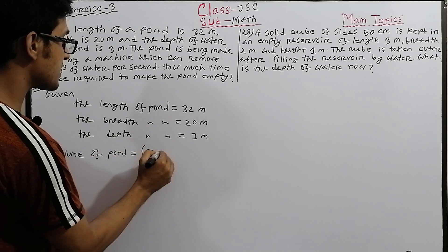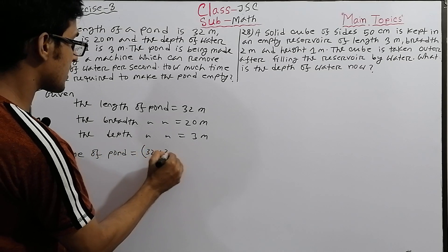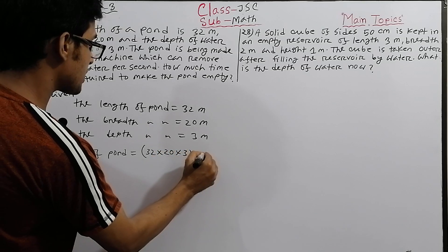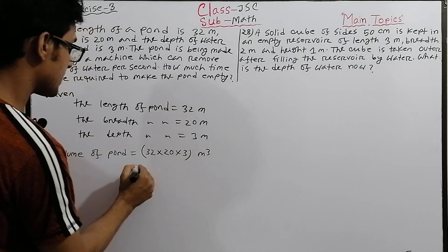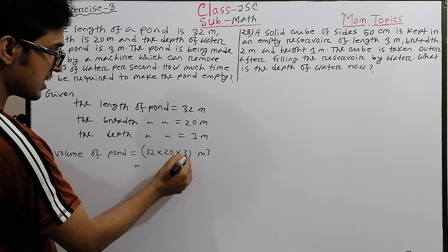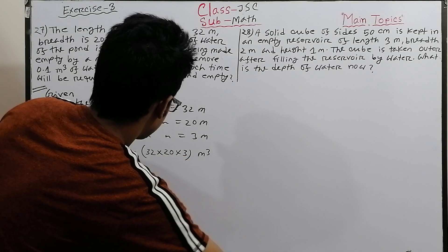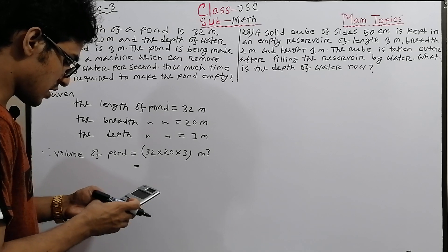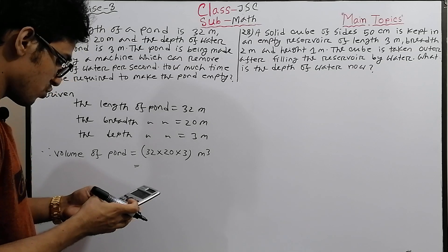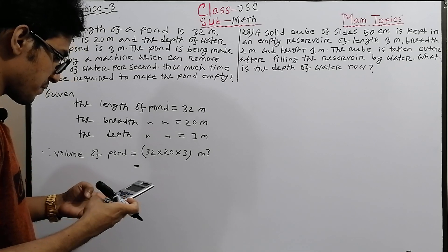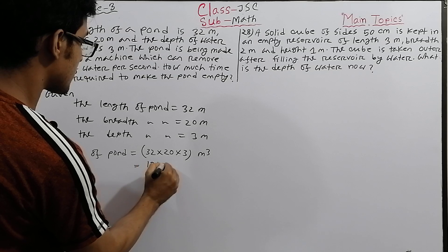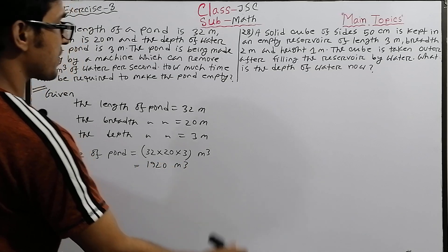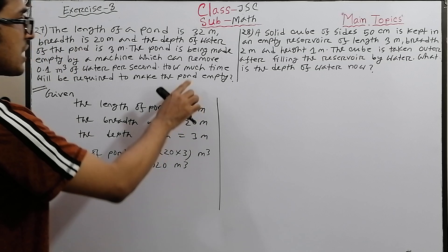The volume of the pond equals length times breadth times height, which is 32 into 20 into 3. So the volume equals 1920 cubic meters.